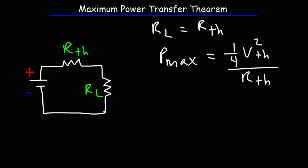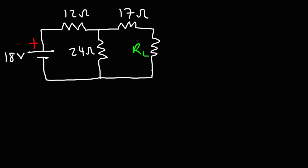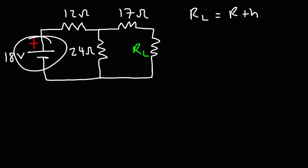So those are the two formulas we're going to be using in this video. Consider this example problem: determine the load resistance where the circuit will deliver maximum power from the battery source to the load, and also determine the maximum power delivered. To calculate the load resistance, we need to calculate the Thevenin resistance. To do that, we're going to create an open circuit across the load resistor and replace the voltage source with a short circuit, or basically a line.